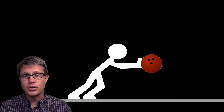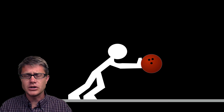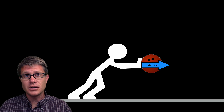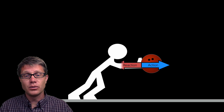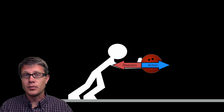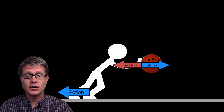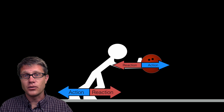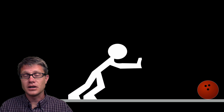Let us look at another scenario — you are pushing a bowling ball, frozen at the point at which you are going to push it. You apply a force into the bowling ball and it is going to apply an opposite and equal force back on you. The ball is going to move but you are not, because you are applying a force against the floor and it is applying a force back on you. So you do not move but the ball quickly moves away.